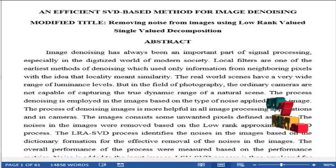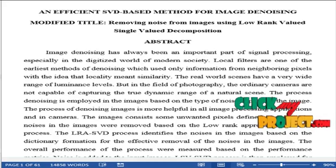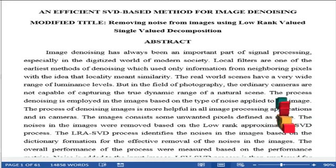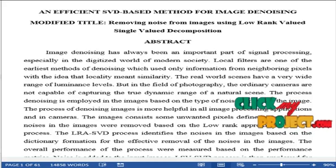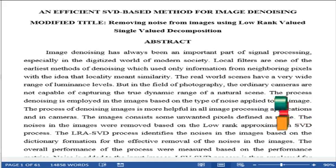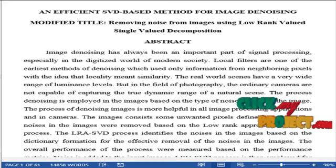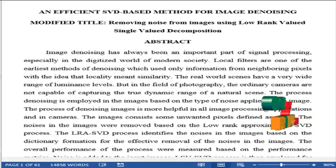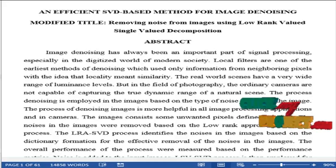In the field of photography, ordinary cameras are not able to capture the true dynamic range of a natural scene. The process of denoising is employed in images based on the type of noise added. Denoising is helpful in all image processing applications. Images consist of some unwanted pixel information displayed as noise.